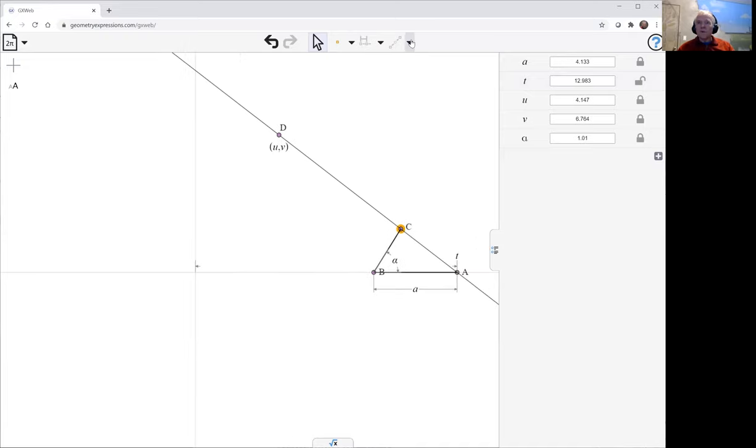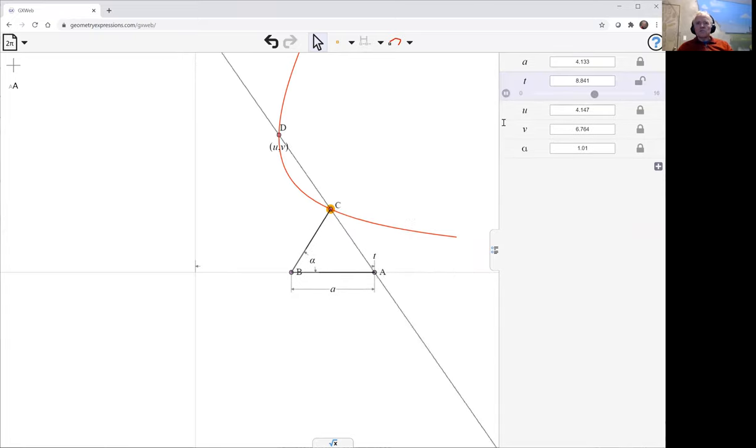And we can draw the curve using the locus tool. Select C, the point C locus tool, and we get to select what parameters are going to vary. The parameter of course is T. And so there is the curve. And we can animate T to watch it being traced out.